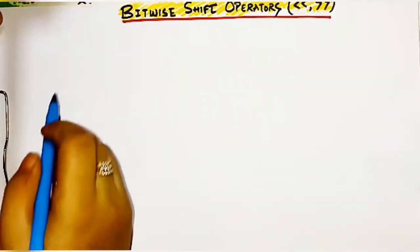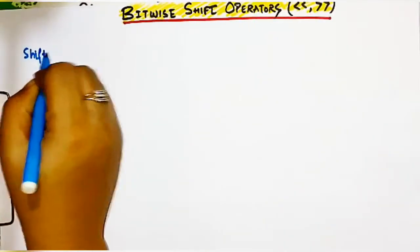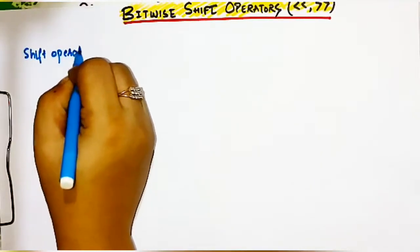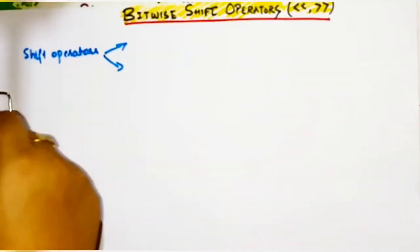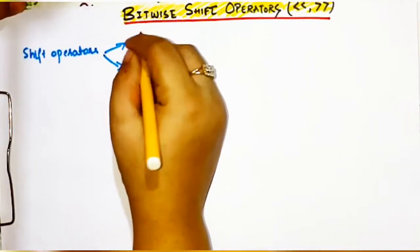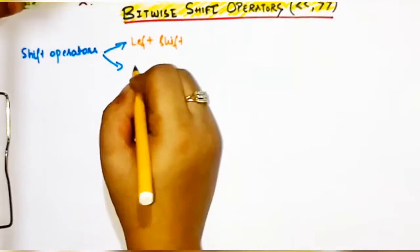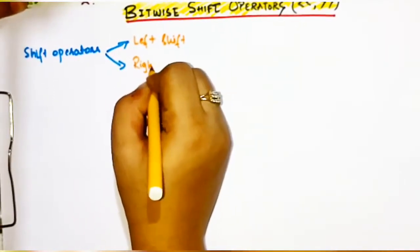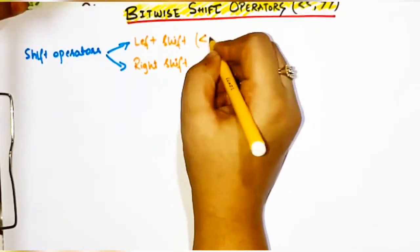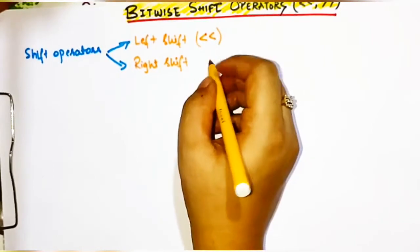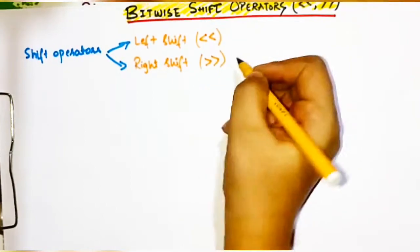Shift operators are mainly of two types: one is the left shift operator and another is the right shift operator. The left shift operator is represented as two backward angles (<<) and the right shift operator is represented as (>>).